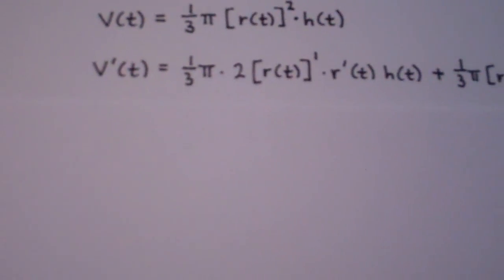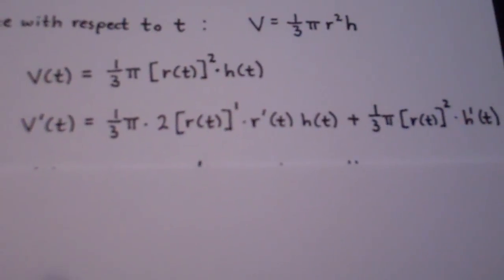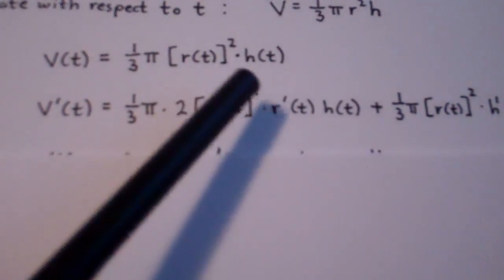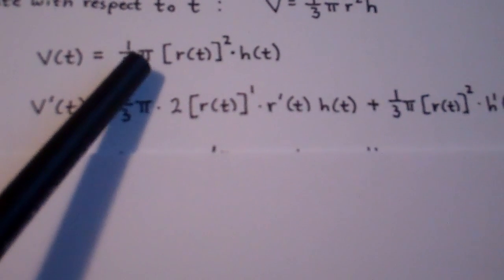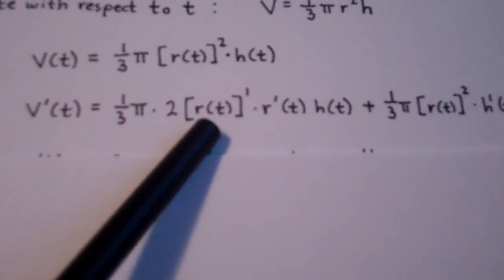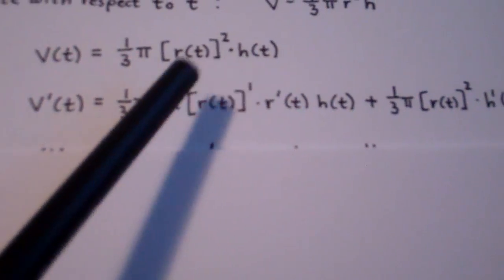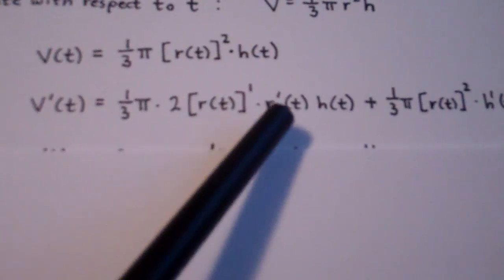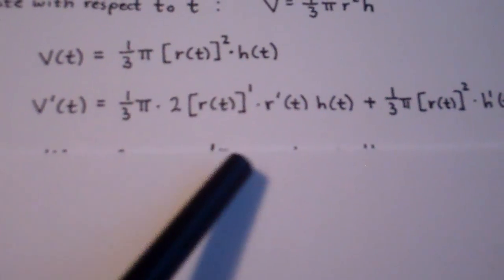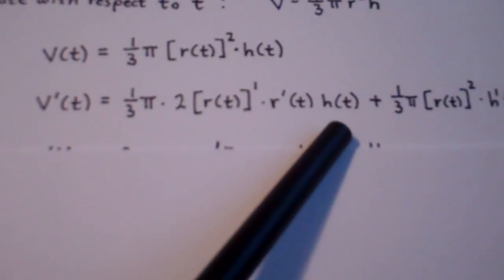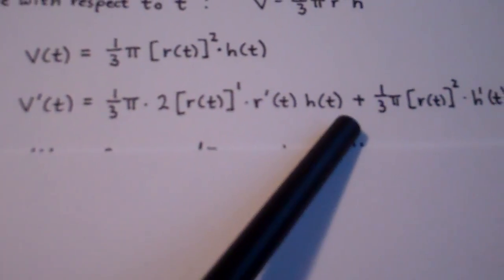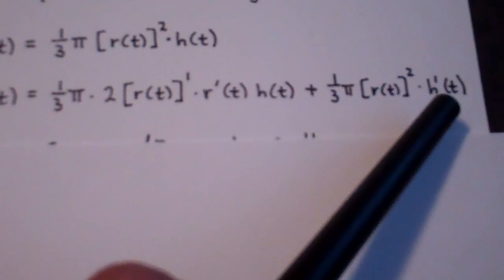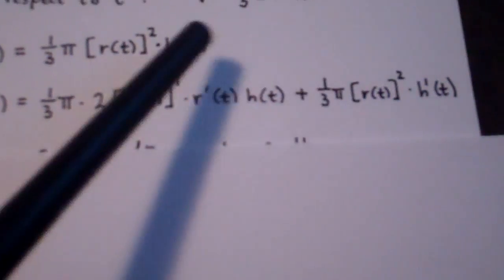Let's take the derivative. We have the derivative of v(t) is v prime of t. Then using the product rule on the right side, we have the constant 1/3 π which stays put. The derivative of r(t)² would be 2 times r(t) to the first power times the derivative of the inside function, r prime of t — that's the chain rule — multiplied by the second function h(t). Plus the first function 1/3 π r(t)², multiplied by the derivative of the second function, which would be h prime of t.